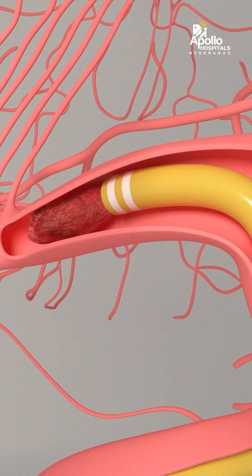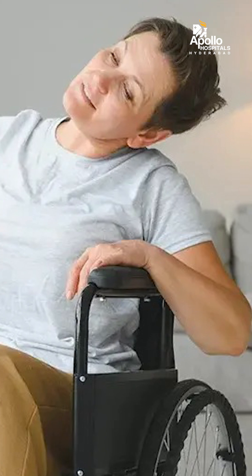Mechanical thrombectomy is one of the specialized procedures that is usually undertaken in cases of acute ischemic stroke to remove the clot. Stroke is the commonest cause of paralysis and it is one of the leading causes of death and disability, other than heart attack and cancers.